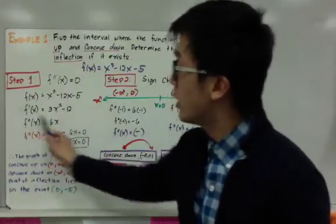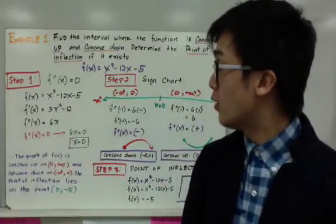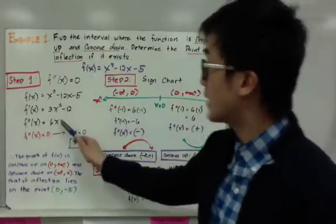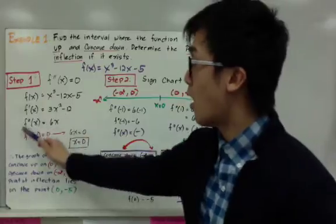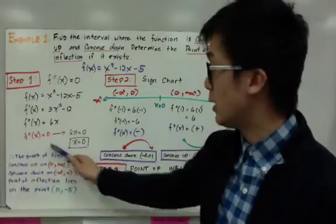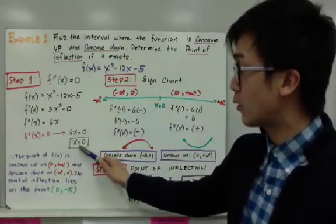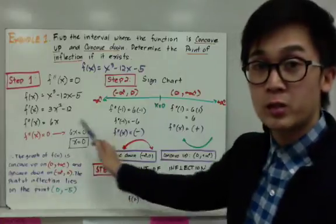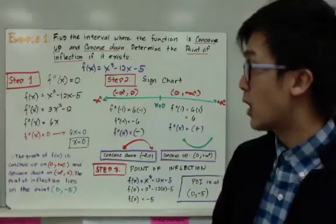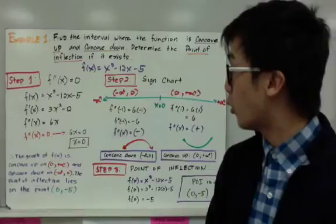We're not concerned about the first derivative right now because we're not being asked about the local minimum and maximum or the direction of our function. Since we're looking for concavity and the point of inflection, we focus on the second derivative and its critical number. Setting f double prime of x equal to 0, we get 6x equals 0, which gives x equals 0 as our critical number.